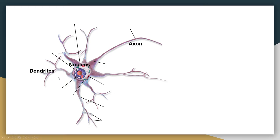Dendrites can be interpreted as the input into the neuron, where these are various inputs from other neurons coming in. The nucleus is essentially what processes these inputs. And finally, the axon is the output, where whatever the nucleus determines, the axon delivers that to other neurons. This is a very simplified explanation, but just bear with me.